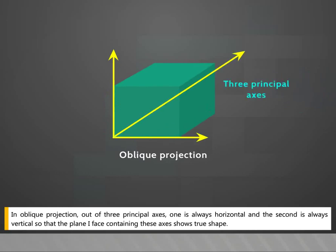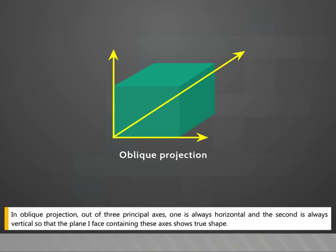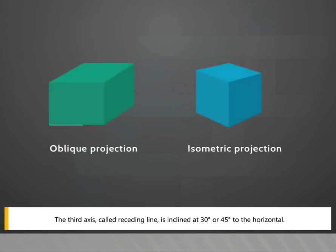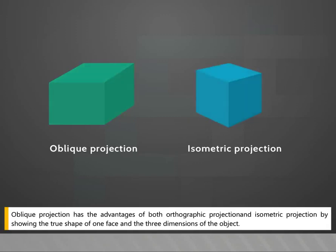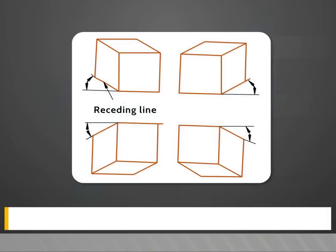In oblique projection, out of three principal axes, one is always horizontal and the second is always vertical so that the plane of one face containing these axes shows the true shape. The third axis, called the receding line, is inclined at 30 degrees or 45 degrees to the horizontal. Oblique projection has the advantages of both orthographic projection and isometric projection by showing the true shape of one face and three dimensions of the object.